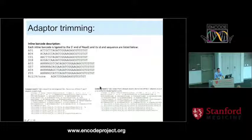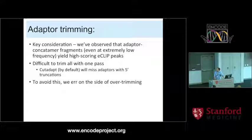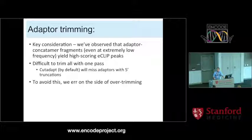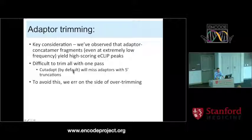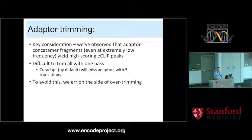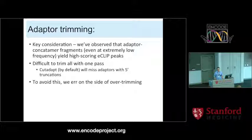Then we do adapter trimming. The problem is that at a very low frequency - around 0.1% - adapter dimers make it through into our libraries. The issue is that 500 reads is not many, but if they all map to the same place in the genome, they create a really good false positive peak. So we wound up erring on the side of over-trimming, doing multiple trimming steps using shifted versions of the adapters, because cutadapt by default is very bad at dealing with five-prime truncations when looking for double adapters. Just be careful with adapter trimming, because it can be a problem.